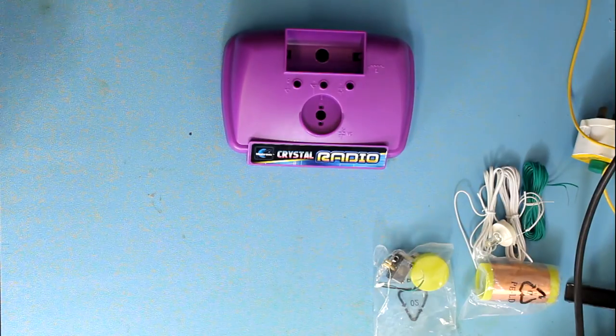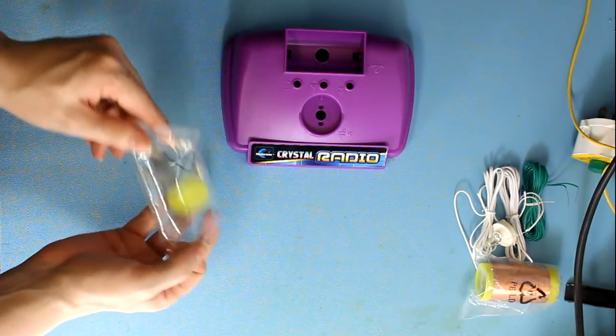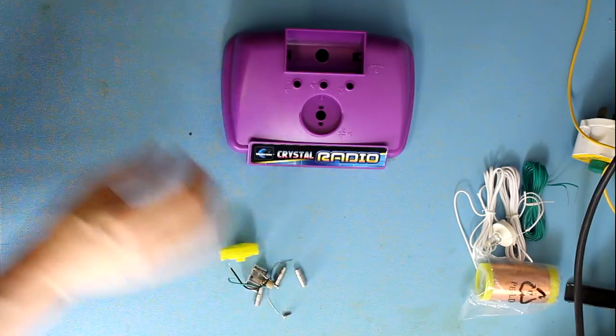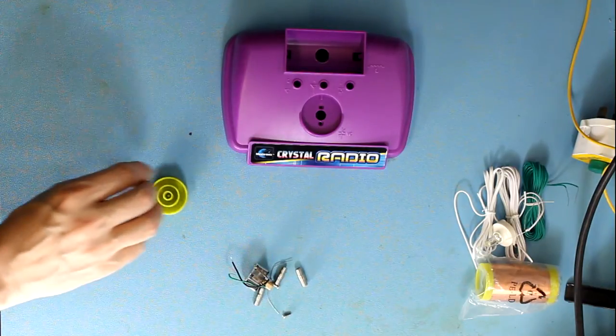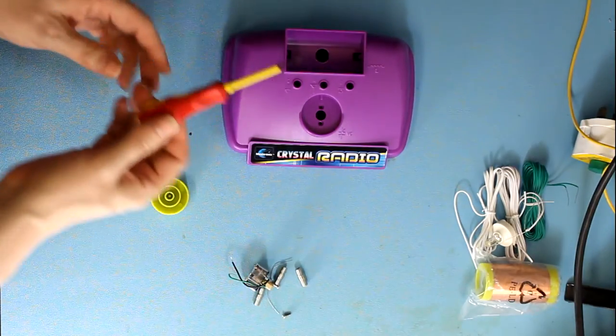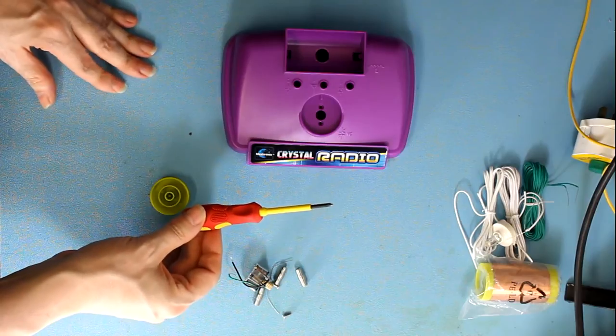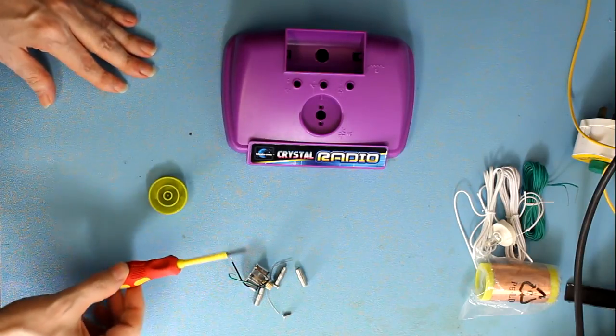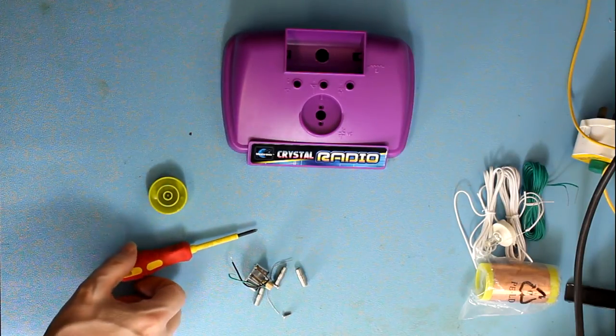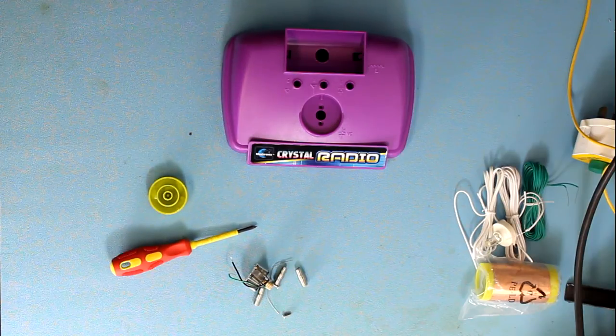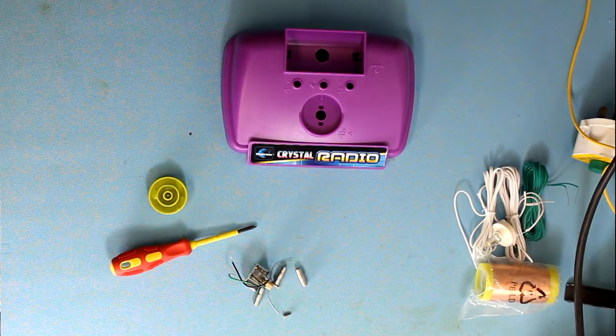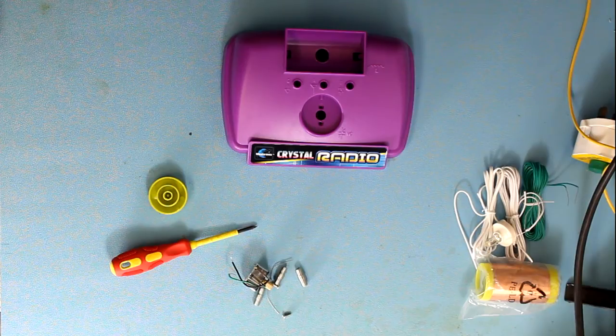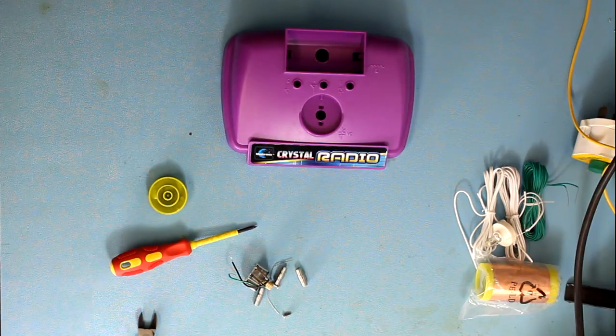So what I'll do is I'll pop them to the side and I'll lay out some components here. Now generally all you need to put these kits together is a small Phillips screwdriver and means of cutting the wires. You can use a set of wire cutters which I have there.